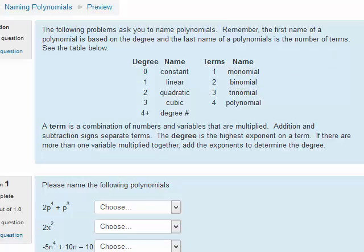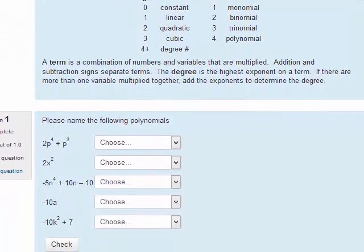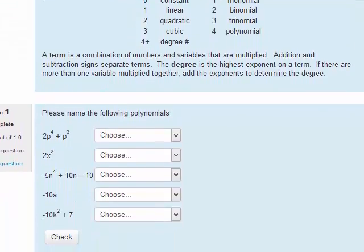This question asks us to name the following polynomials. We have 2p to the 4th plus p cubed. The highest exponent on a variable controls the degree. So the highest exponent on the variable p here is 4. So this is degree 4.